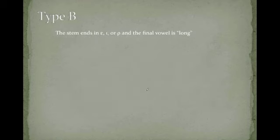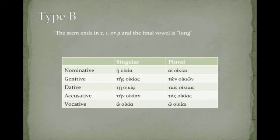And then we had type B, when the stem ended in epsilon, iota, or rho, where that vowel shift to the eta couldn't take place, and the alpha remained an alpha. So, like, hē oikia, tēs oikias, tē oikia, tēn oikian. All right, alpha instead of eta.